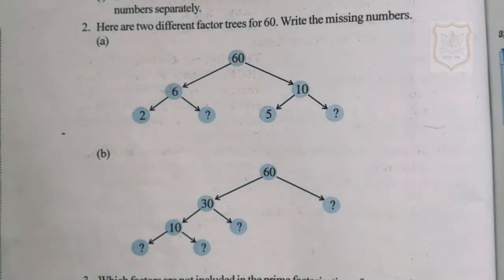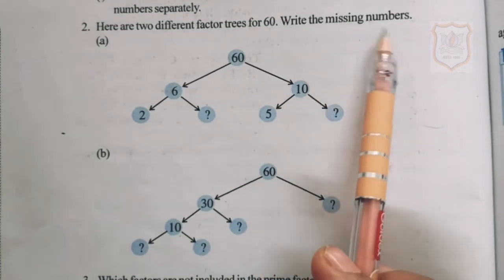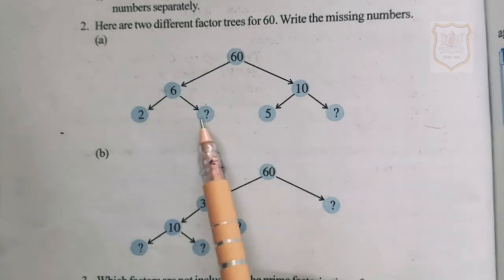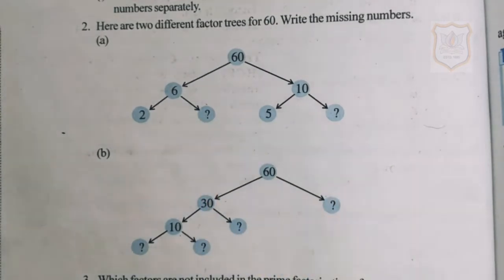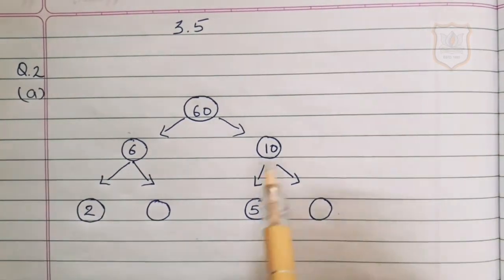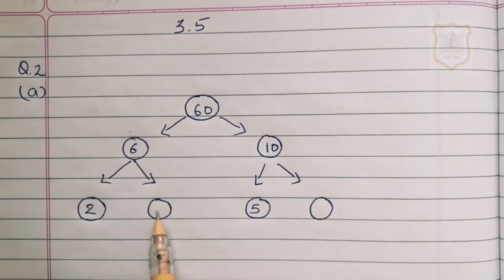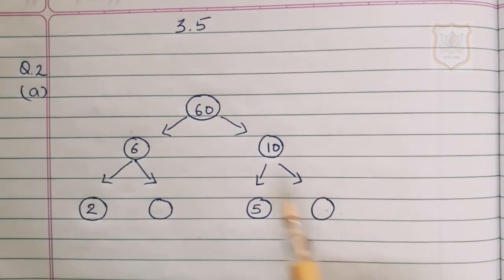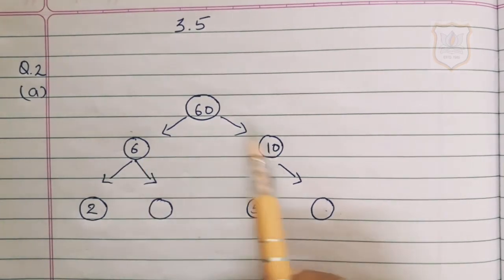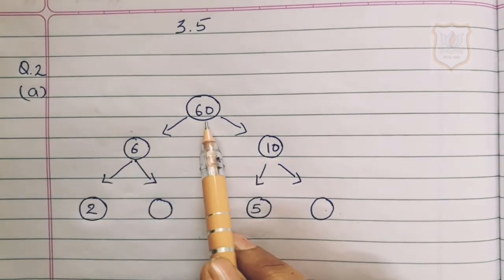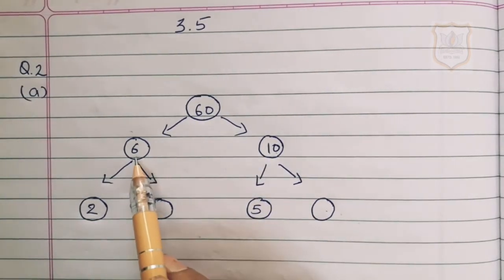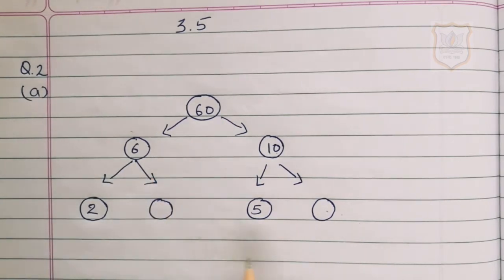Now question number 2: here are two different factor trees of 60 — write the missing numbers. Two factor trees for the number 60 are given and we have to find the missing numbers. For part A, a factor tree is given for 60. By multiplying 6 and 10 we get 60. We have to split the numbers until we get all prime factors.